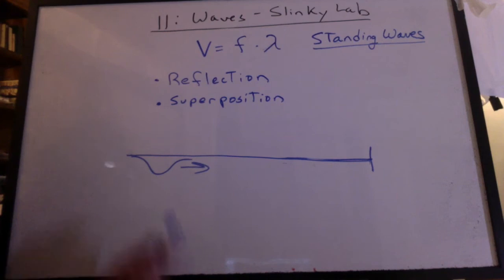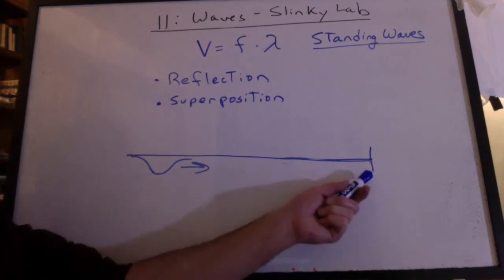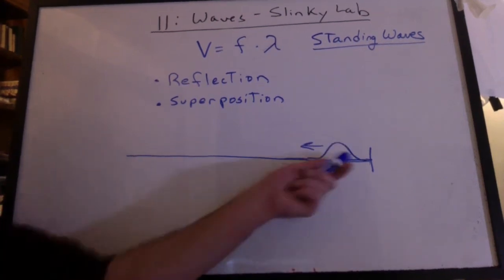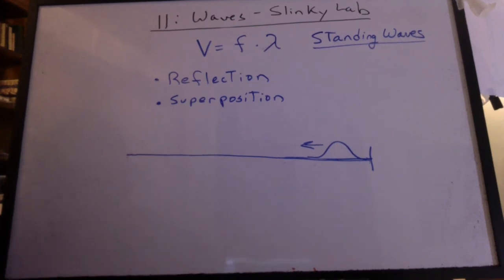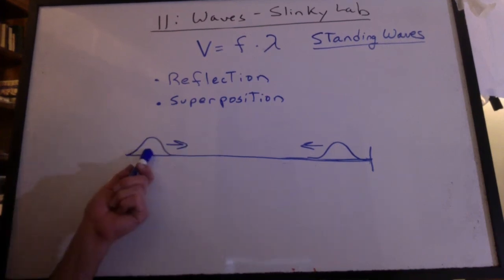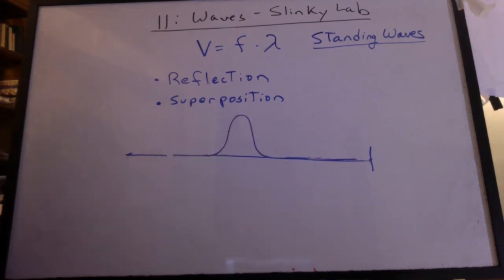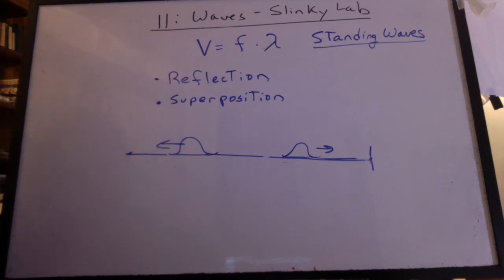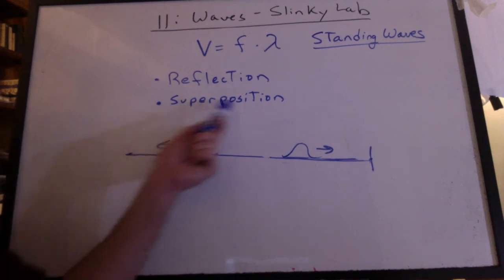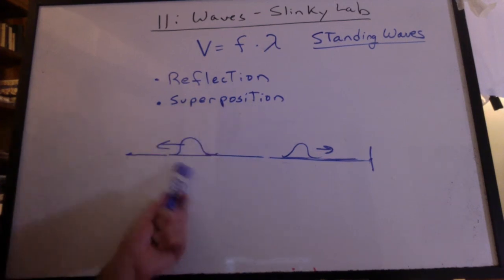How about this one? We send a trough down that hits the end, and it reflects right side up. At that moment, you send down a crest. What's going to happen when they overlap? You get a much larger crest, and they continue to move on as they pass through each other. You should be able to see this in your lab as well. So remember that superposition is about adding the heights when the waves overlap.